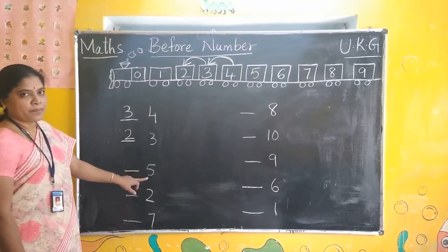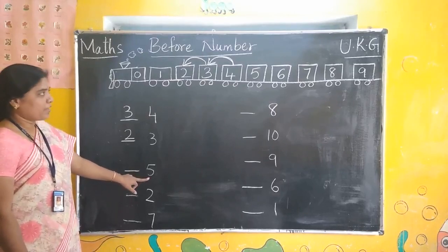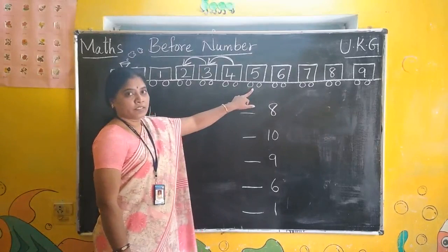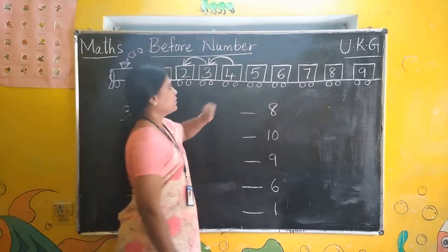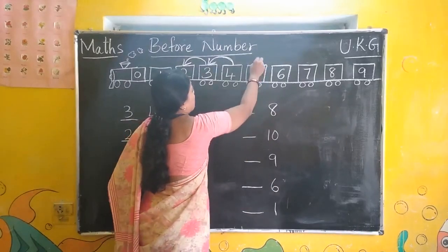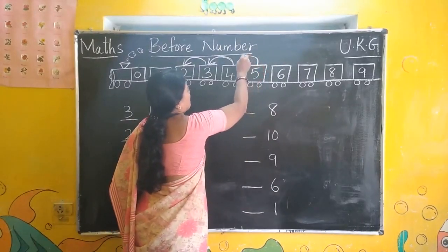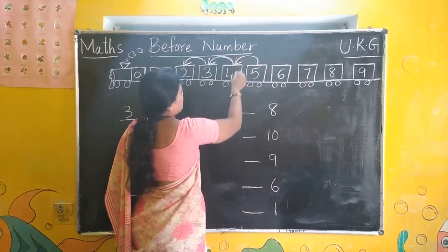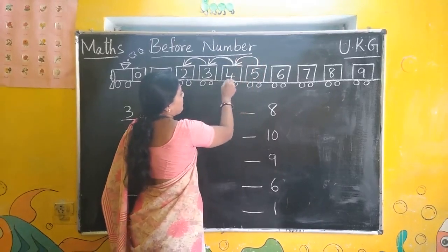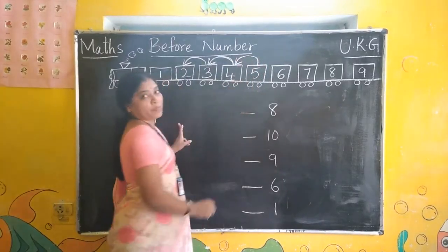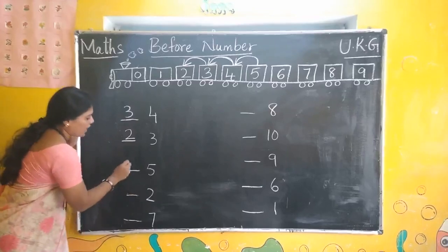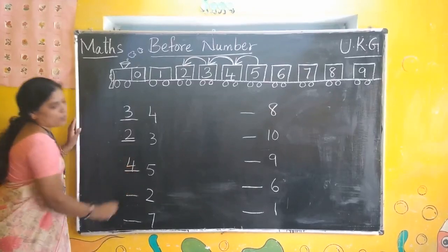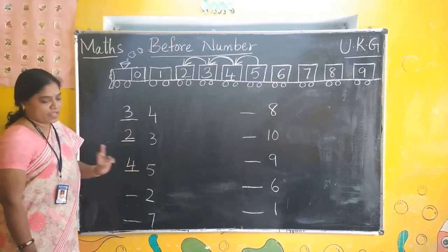Next number? 5. Where is 5 here? There is 5. Now, before 5, which number comes? Draw an arrow like this. What is this number? Number 4. Write down 4. So, 4, 5.